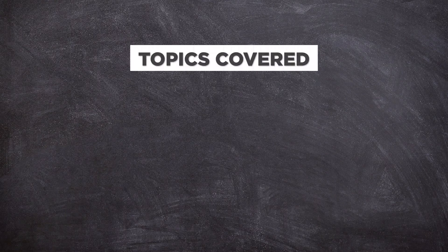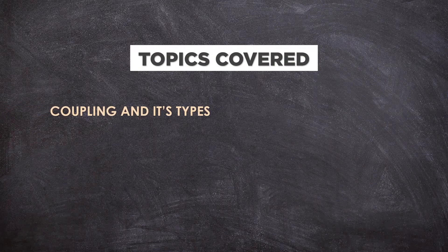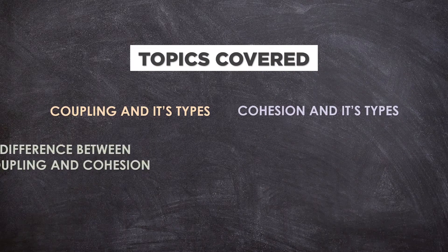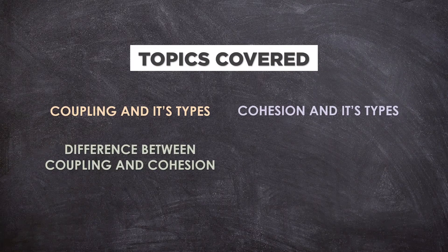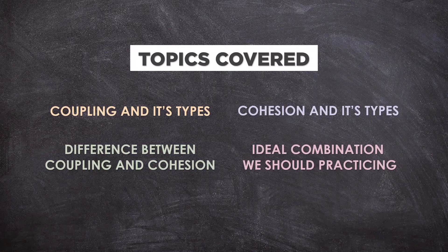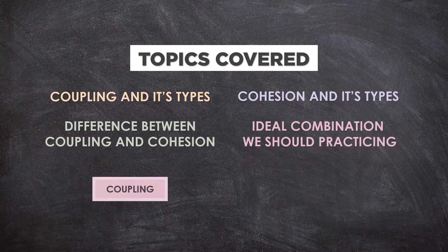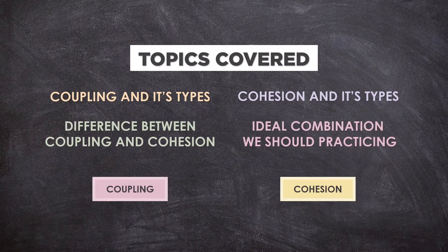By the end of this video you will learn about coupling and its types, cohesion and its types. You will know the difference between coupling and cohesion, and what is the ideal combination of these two which we should consider practicing. Coupling and cohesion are two important concepts in object-oriented design, and we will briefly discuss them here.